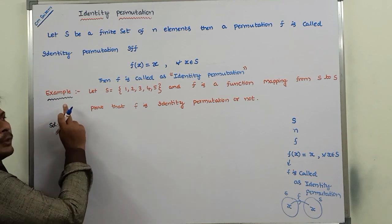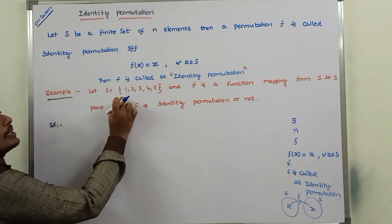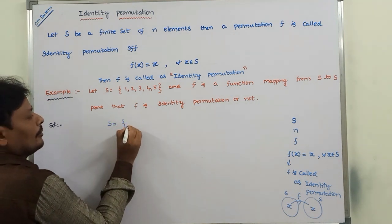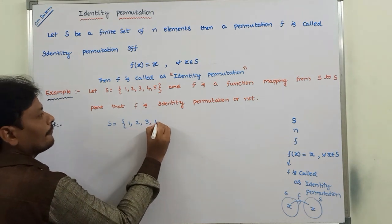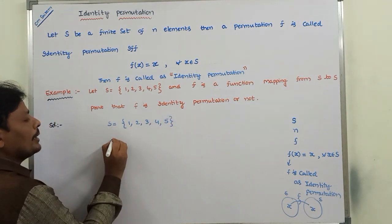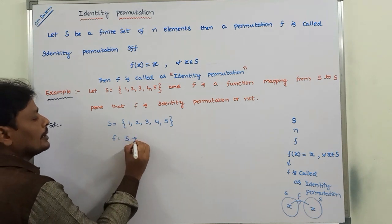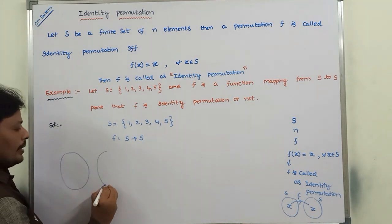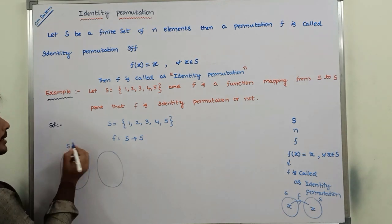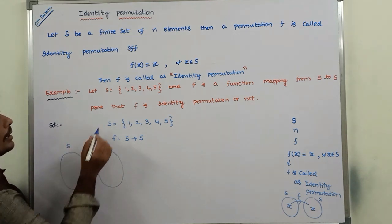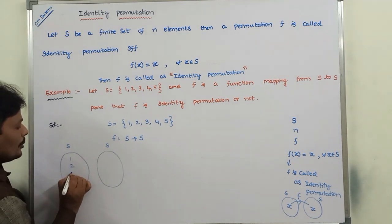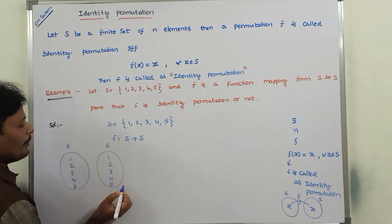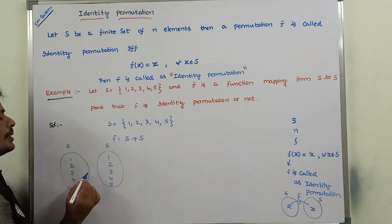Now we can go for the example. Let S be equal to the set {1, 2, 3, 4, 5}. f is a function mapping from S to S. I am taking set S here — the elements in S are 1, 2, 3, 4, 5 on the left side and 1, 2, 3, 4, 5 on the right side. f is a mapping from S to S.